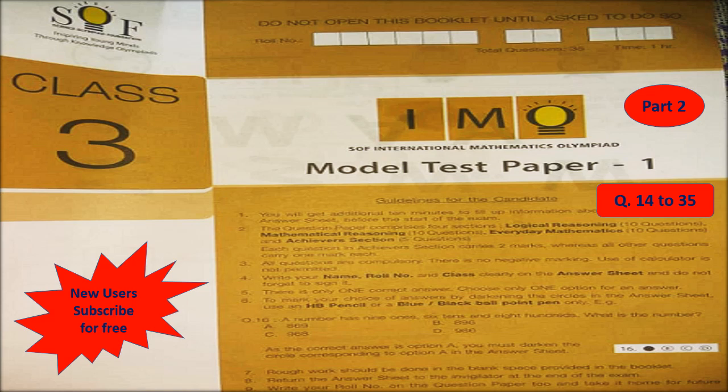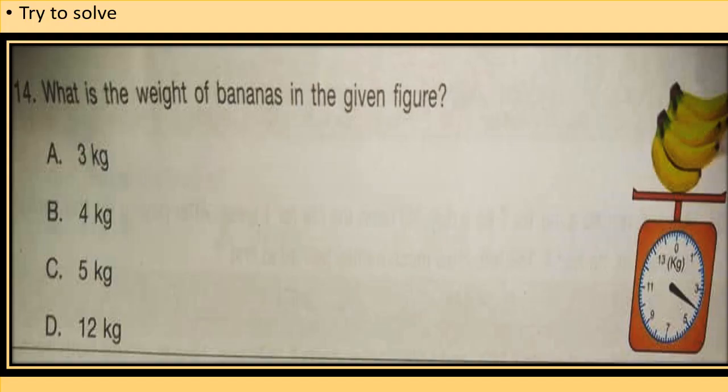Hello everyone, welcome to Easy Olympiad Maths. This is IMO model test paper 1 for Class 3, Part 2, questions 14 to 35. New users, subscribe to the channel and hit the bell icon to get notifications for new uploads.